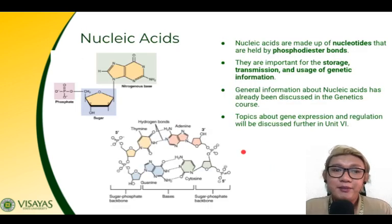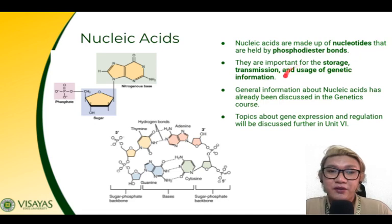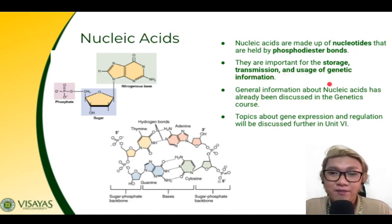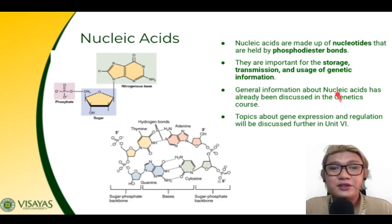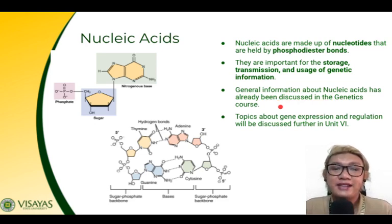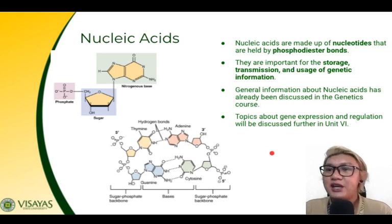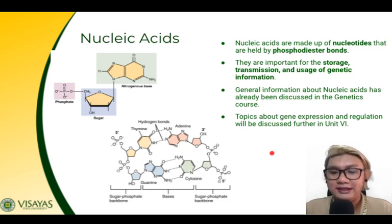Nucleic acids are made up of nucleotides held together by phosphodiester bonds. They are important for the storage, transmission, and usage of genetic information. General information about nucleic acids has already been discussed in your genetics course, and topics about gene expression and regulation — including transcription and translation — will be discussed further in unit six of this course.